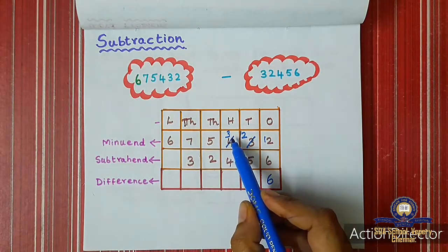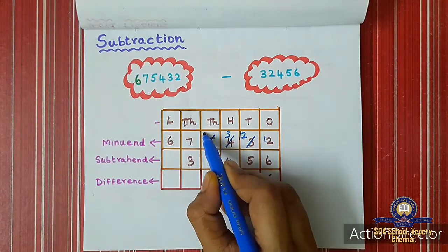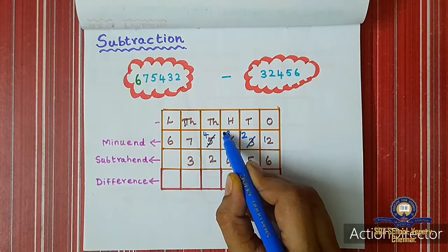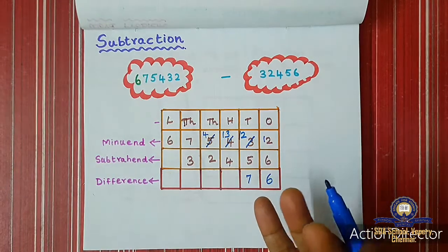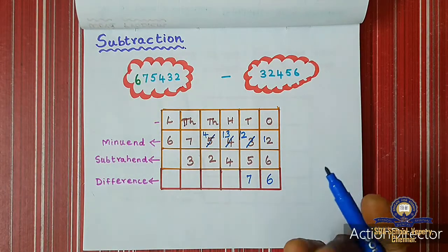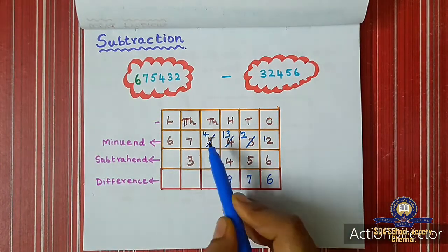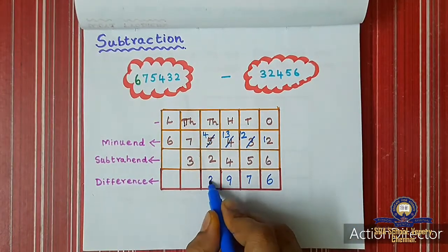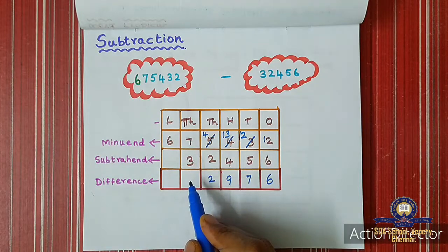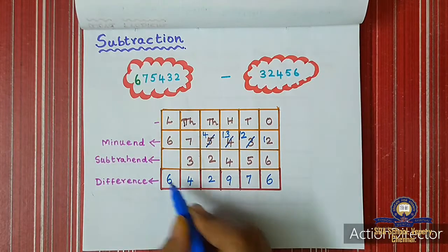In the hundreds place: 3 is smaller than 4, so we borrow again. This becomes 13. 13 minus 4 is 9. Then 4 minus 2 is 2. Then 7 minus 3 is 4. The remaining digit 6 comes down as it is.